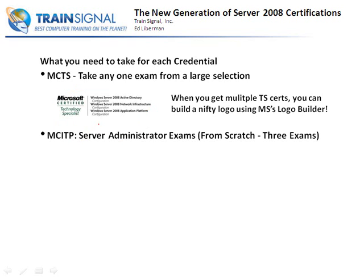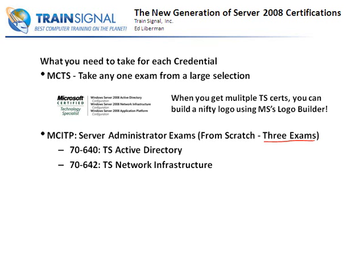Moving on up to the MCITP Server Administrator: in order to get this certification from scratch — meaning if you don't currently have any Microsoft certifications — there are three exams. You need to take the 70-640 exam, which gives you an MCTS in Active Directory; the 70-642 exam, which is what this course is based on and covers network infrastructure; and then the 70-646 exam to make yourself an MCITP Server Administrator.